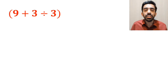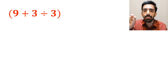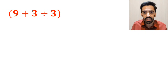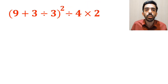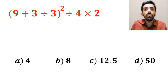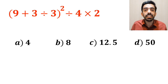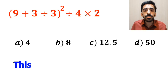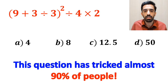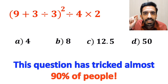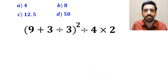What is the value of the expression (9 plus 3 divided by 3), all to the power of 2, then divided by 4 multiplied by 2? Which option do you think is the correct answer to this question? This expression has tricked almost 90% of people. Let's go step by step and solve it together.